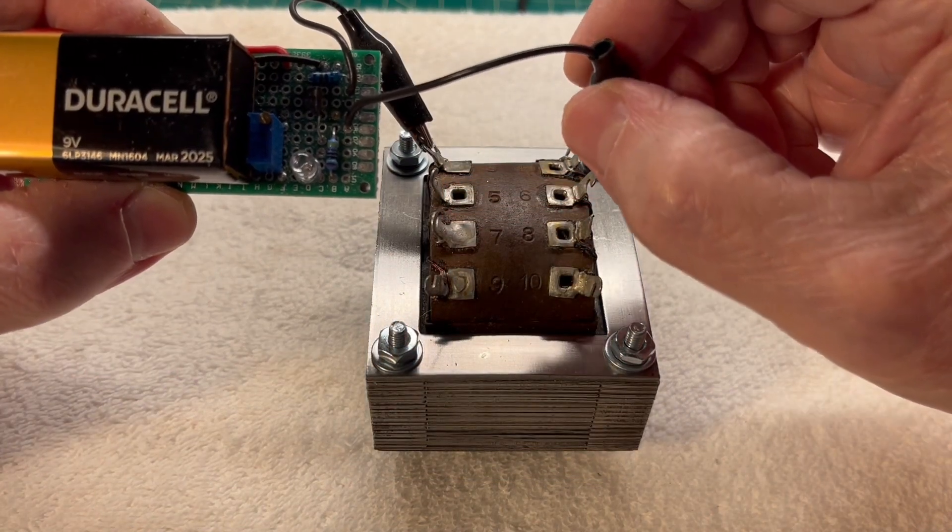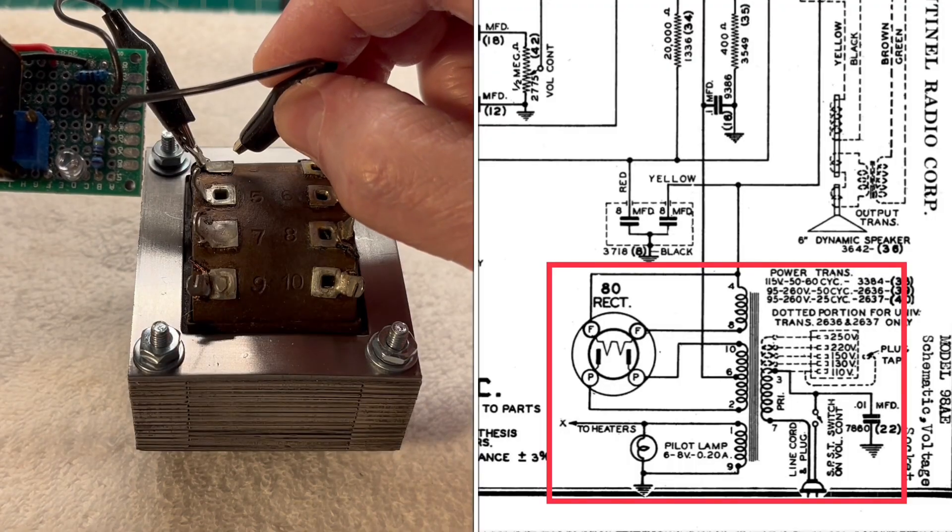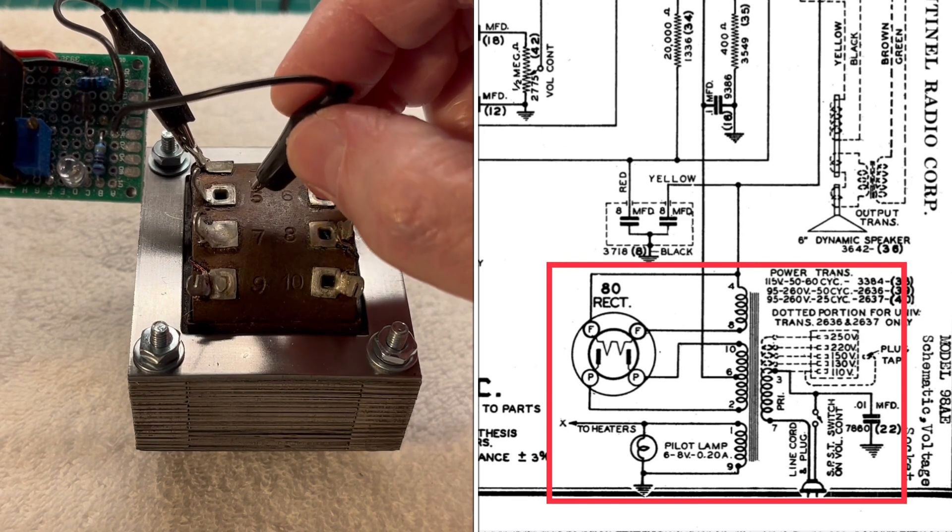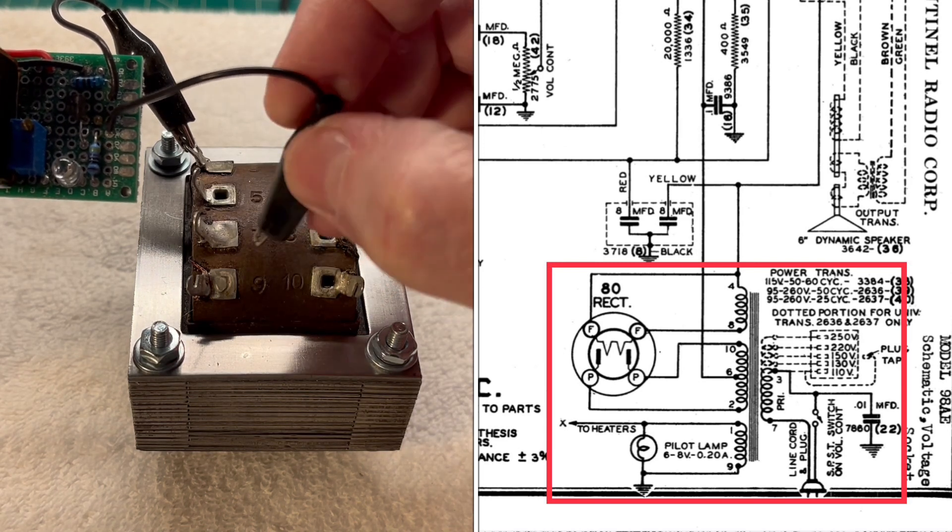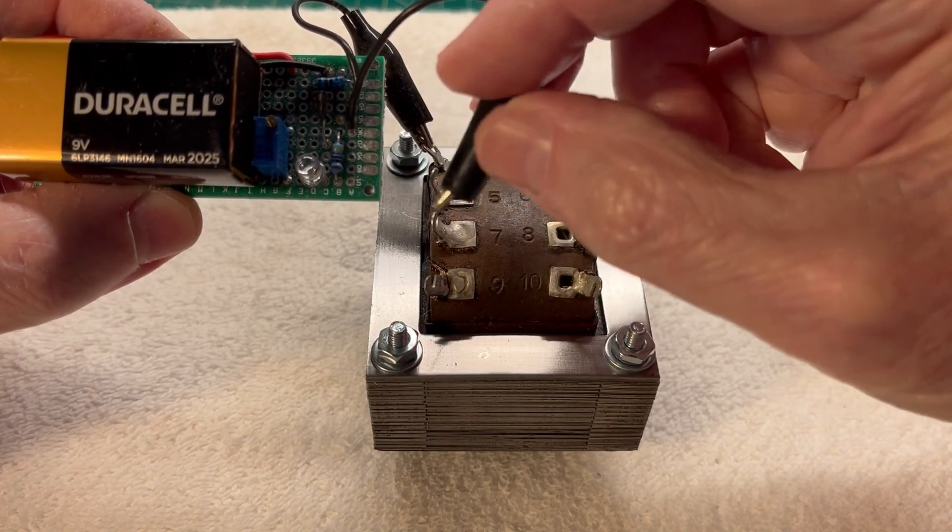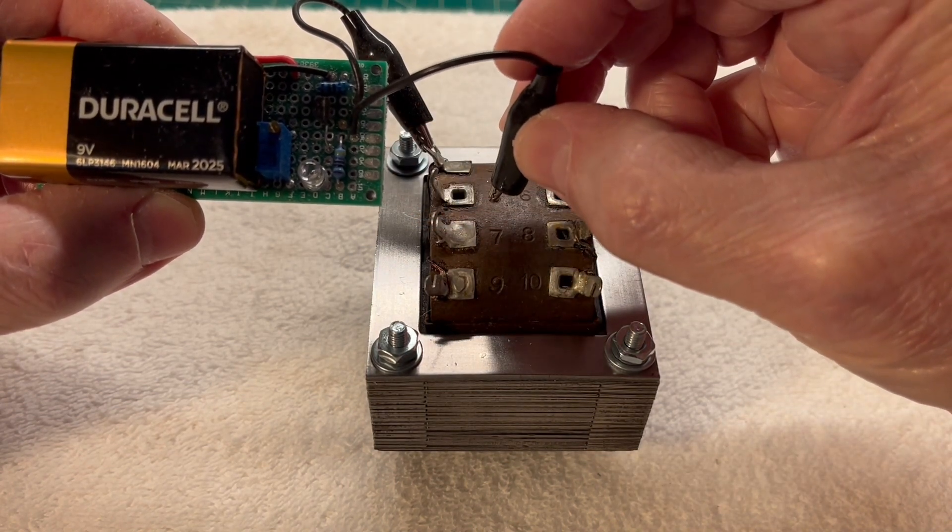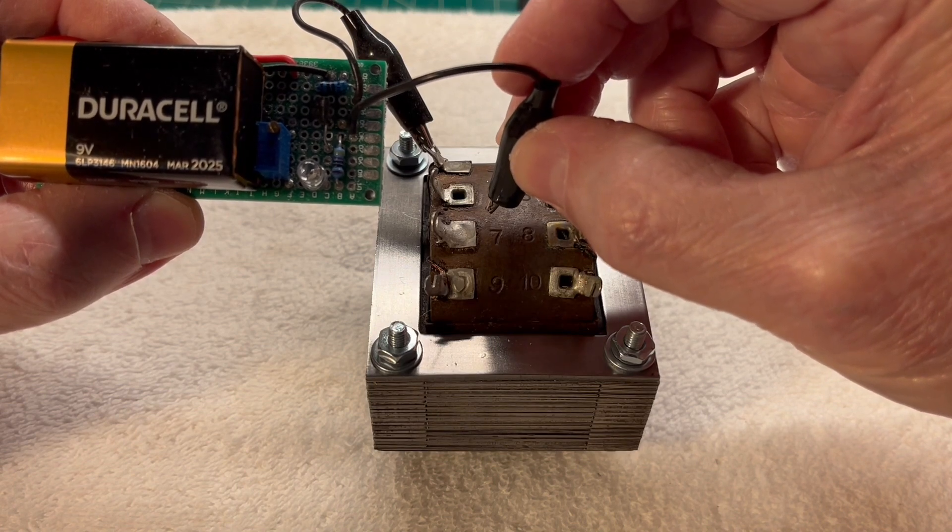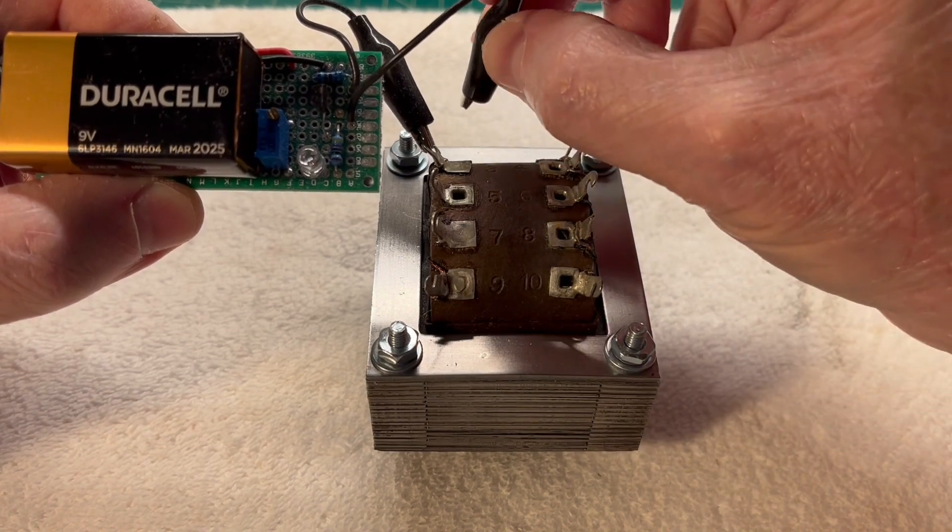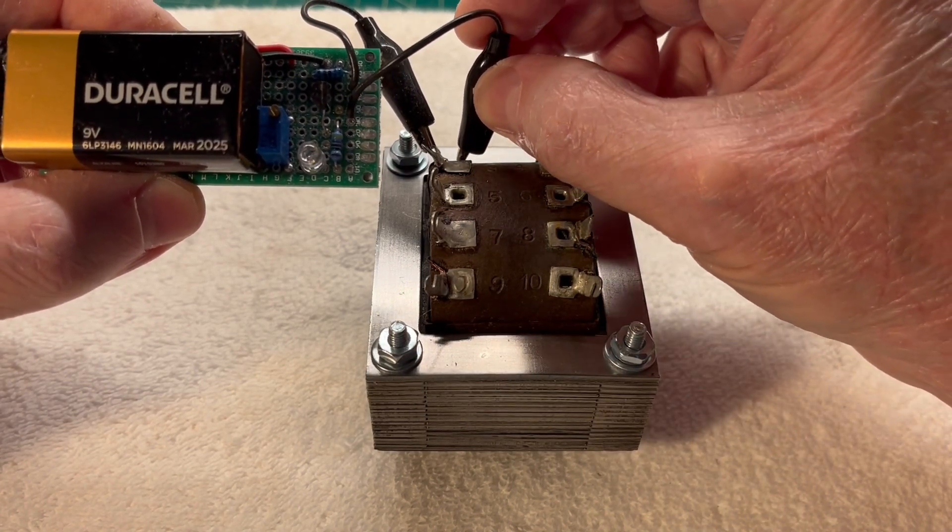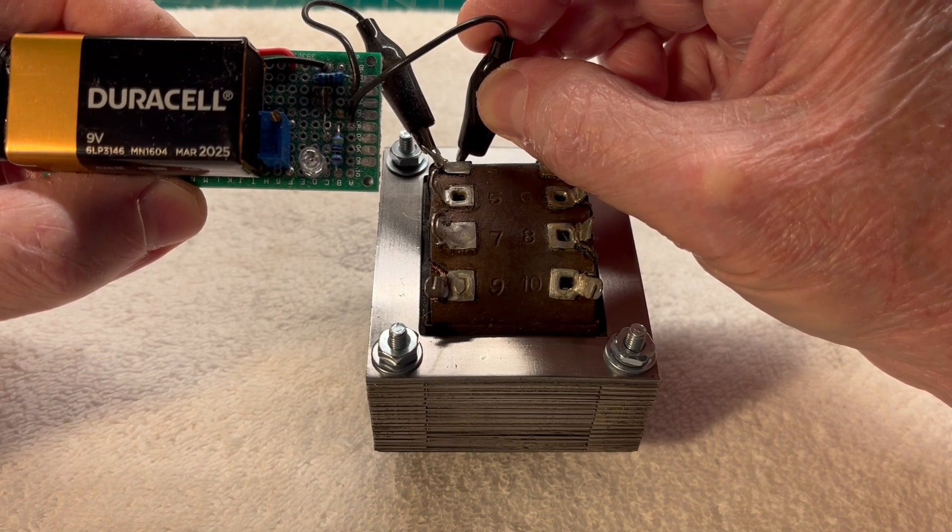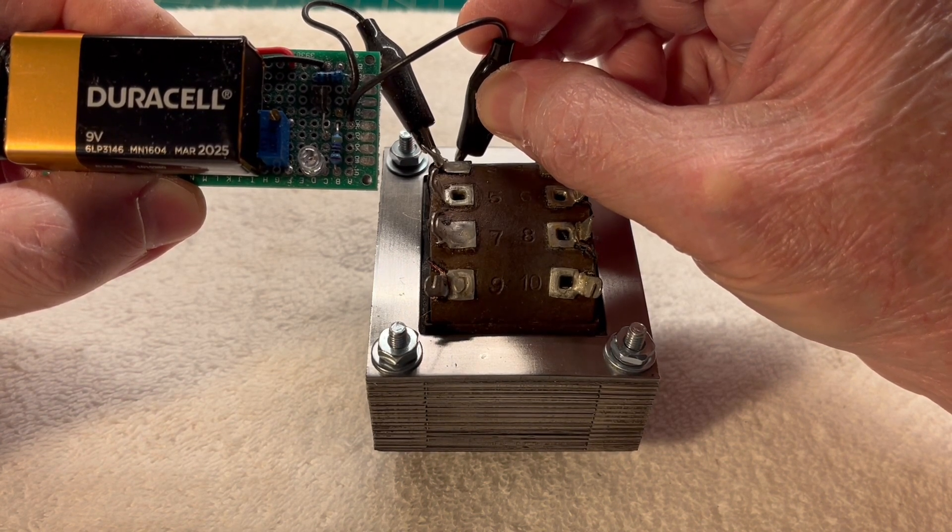We'll start the test here on the primary side. I'm connected to point number three. You can reference the schematic itself. Points three and seven make up the primary winding of the transformer. The LED here should illuminate brightly if there's any DC resistance across those points. You can see we do have DC resistance. Let's go back to point number one. You might see a momentary flash and then the LED light goes out. There's no DC resistance there.